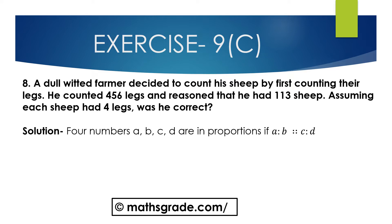Now question number 8. A dull-witted farmer decided to count his sheep by first counting their legs. He counted 456 legs and concluded that he had 113 sheep. Assuming each sheep had 4 legs, was he correct?